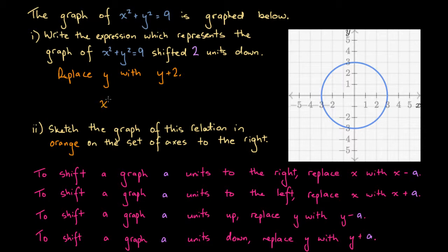So we're going to get x squared plus, and instead of y we're going to get y plus 2 in brackets equals 9. Great, so this expression represents the graph of this relation in blue just shifted 2 units down. And that's all we need here.